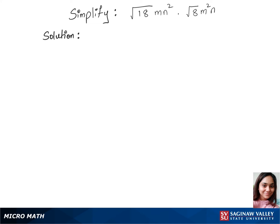Let's simplify this question. We'll first split the terms under the square root in our first step. So that's square root of 18, we'll write that as 9 times 2 times m times n squared. We have square root of 8, we'll write that as square root of 4 times 2 times m squared and n.